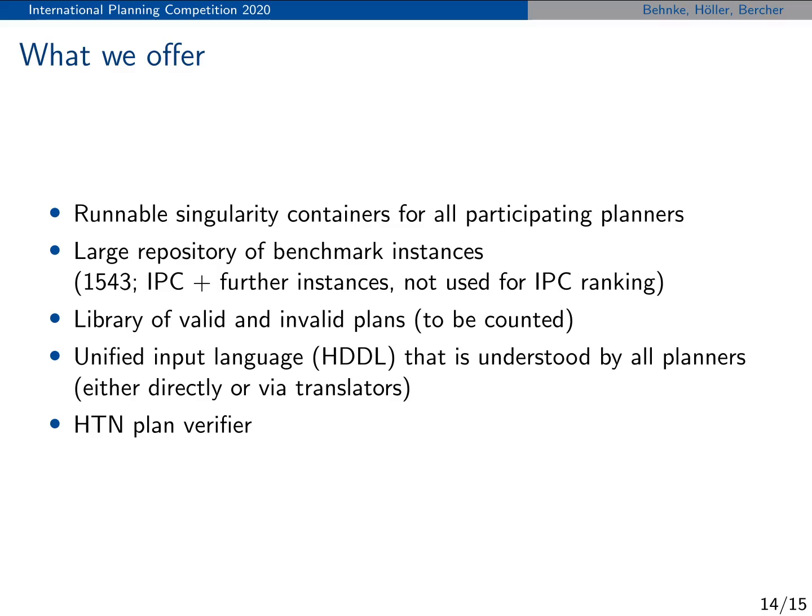As a result of the IPC, we not only offer certificates to the winners and the ranking you just saw, but also a lot of other materials for the community. Notably, runnable Singularity containers for the participating planners that you can use to evaluate your own planners against. We offer a large repository of benchmark instances — the largest so far for HTN planning, with 1,543 instances — comprising the IPC instances plus further submissions not included in the IPC benchmark set. We will publish a large library of valid and invalid plans from the development and testing phase. We also offer a unified input language, HDDL, understood by all these planners either directly or via translators already integrated in the Singularity containers. And we offer an HTN plan verifier.